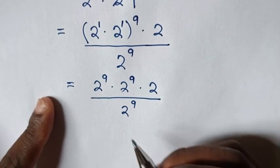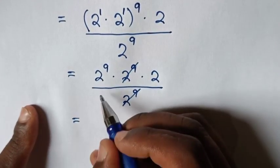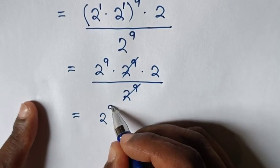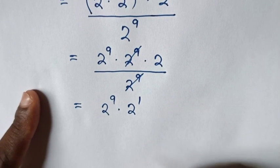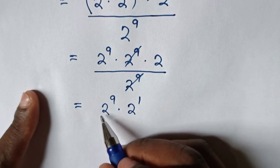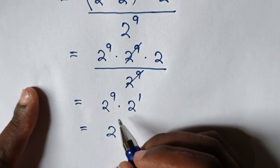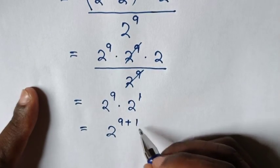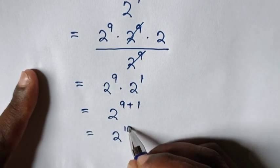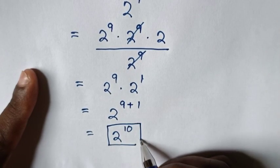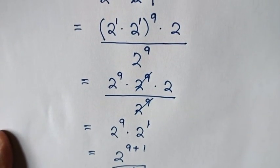Then to simplify, this and this will cancel. So here it will be equal to the result.